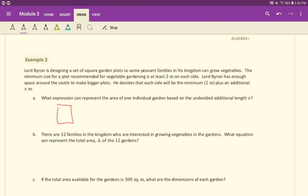So, a square garden plot - what expression can represent the area of one individual garden based on the undecided additional length x? We know for sure that the dimensions will have a 2, because they're at least going to be 2 meters on each side, but they're going to add an additional x to each dimension. So if I add an x here to keep this thing square, we'll also have to add x here, because the square has all sides equal.